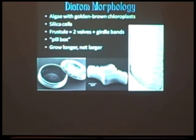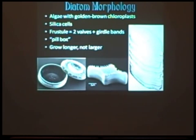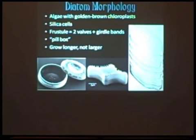So first, diatom morphology. Diatoms are algae — a very diverse group of organisms that is not very clearly defined. They're usually aquatic and photosynthetic. Diatoms are algae with golden brown chloroplasts, and you can actually see them bloom in lakes, usually in the spring or later in the fall, before the green algae really shows up. You get this lovely golden brown color that's mostly diatoms.